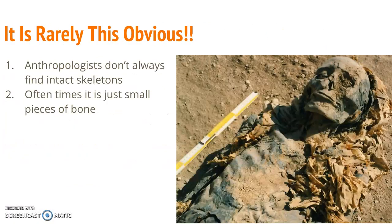In this picture, this is every forensic anthropologist's dream — an entire skeleton, still intact, with some muscle attachments and skin. However, that is rarely the case. They usually don't find intact skeletons; most of the time it's just small pieces of bone or small fragments in a generalized location.